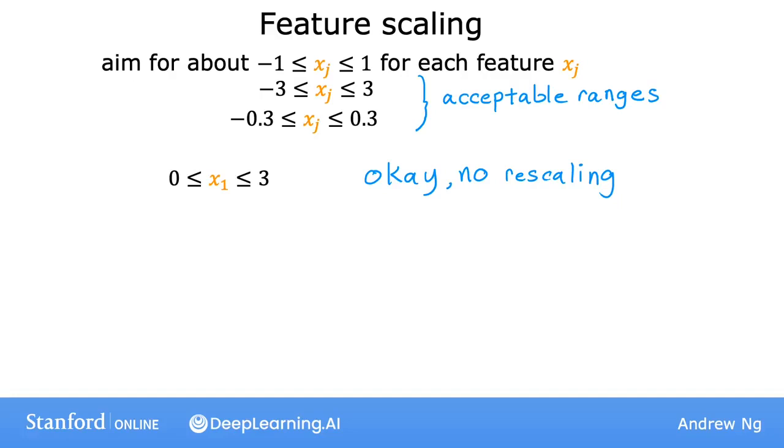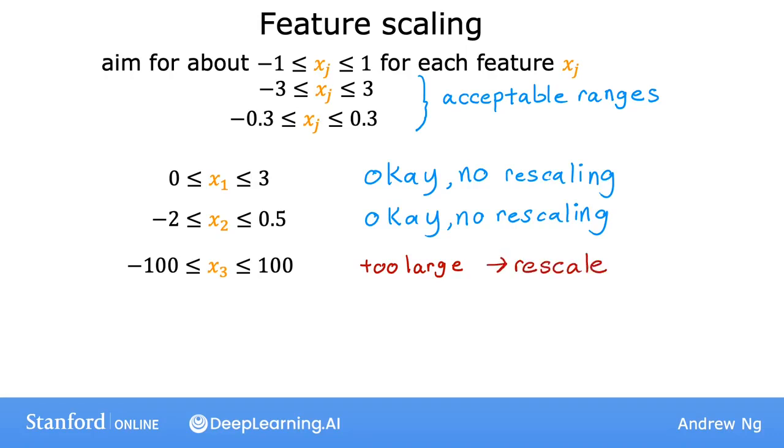Or if you have a different feature x2 whose values are between negative 2 and plus 0.5, again that's okay. No harm rescaling it, but it might be okay if you leave it alone as well. But if another feature, like x3 here, ranges from negative 100 to plus 100, then this takes on a very different range of values than something from around negative 1 to plus 1. So you're probably better off rescaling this feature x3 so that it ranges from something closer to negative 1 to plus 1. Similarly, if you have a feature x4 that takes on really small values, say between negative 0.001 and plus 0.001, then these values are so small that means you may want to rescale it as well.